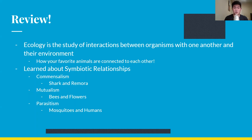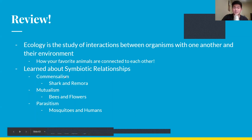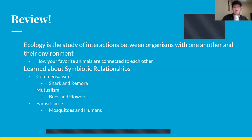We also learned about the three types of symbiotic relationships: commensalism, with sharks and remora as an example; mutualism, with bees and flowers; and parasitism, like mosquitoes and humans. Also, predation — such as a lion and a gazelle. Commensalism is where one organism benefits and the other is not affected. Mutualism is where both organisms benefit. Parasitism is where one organism is harmed and the other benefits. Predation is where one organism is killed and the other benefits.